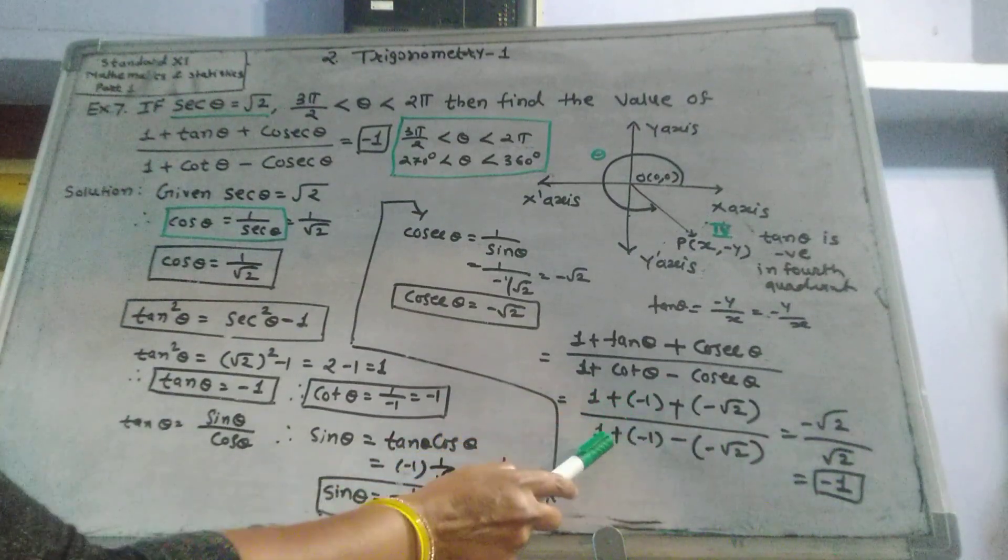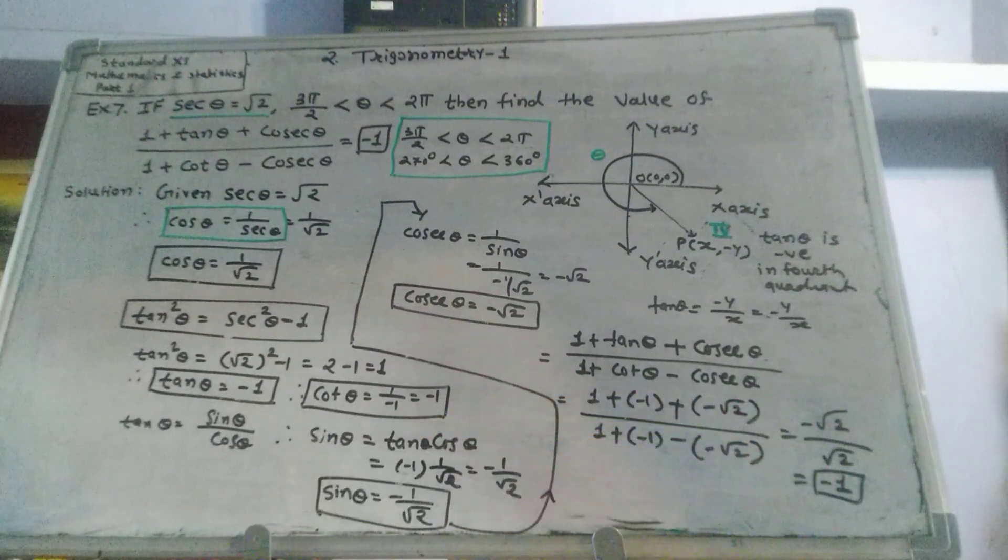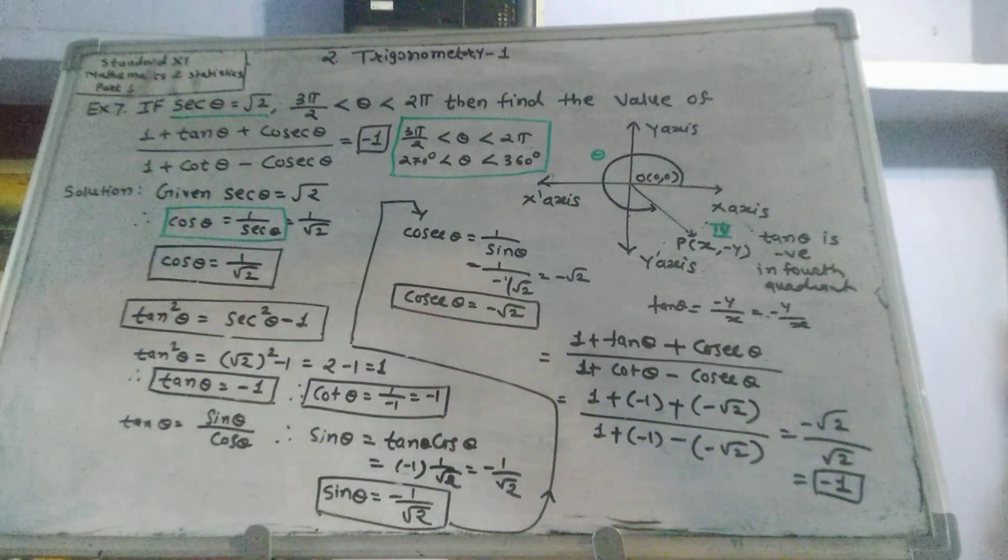1 negative 1 cancel out, 1 negative 1 equals 0. Then negative negative positive, negative root 2 divided by root 2 equals negative 1. The answer is negative 1.